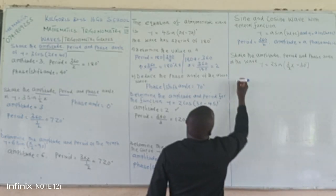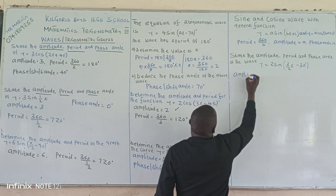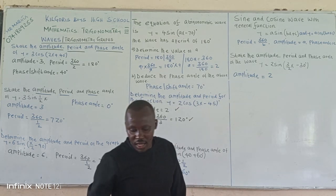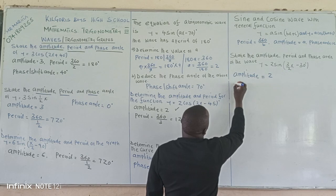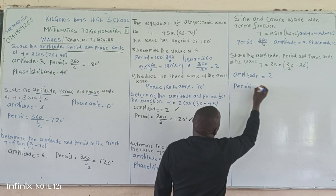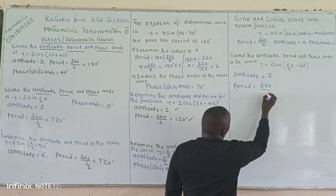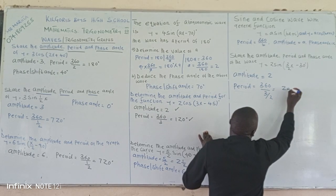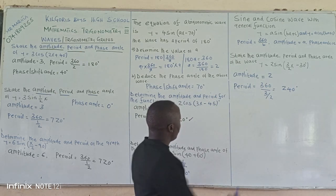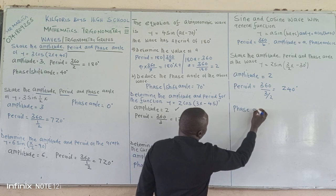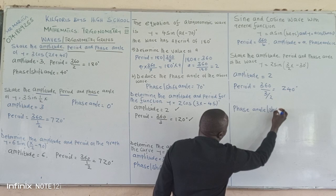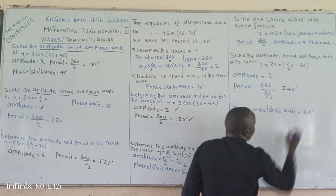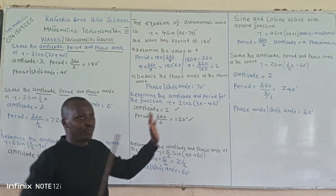State the amplitude, the period, and the first angle of the wave. The amplitude is equal to 2. The period is 360 divided by the coefficient of x, which is 3 over 2, and that gives us 240 degrees. The first angle, or shift angle, is the corresponding value. That is the simple way of getting the period, the amplitude, and the phase angle from trigonometric waves.